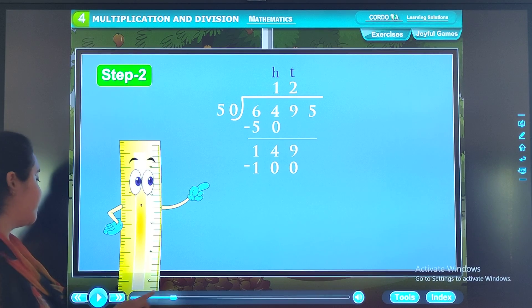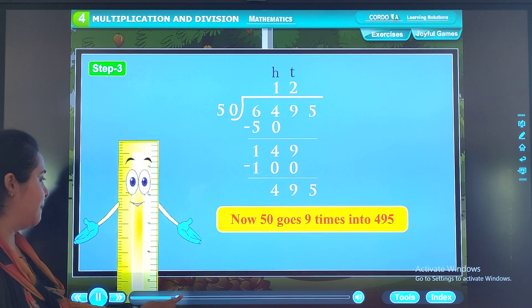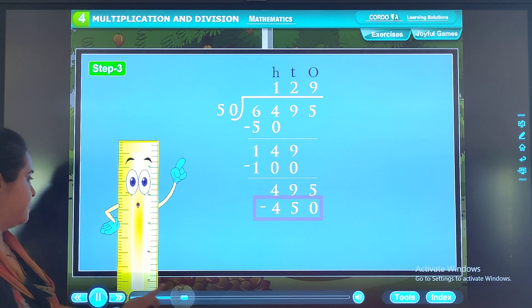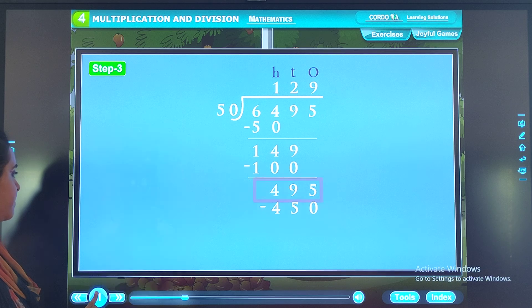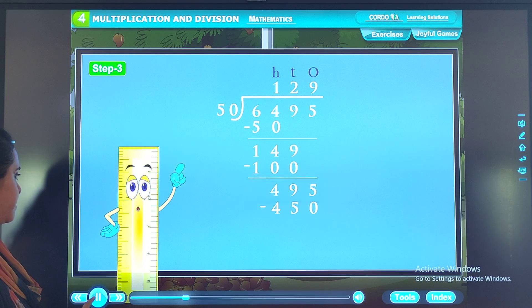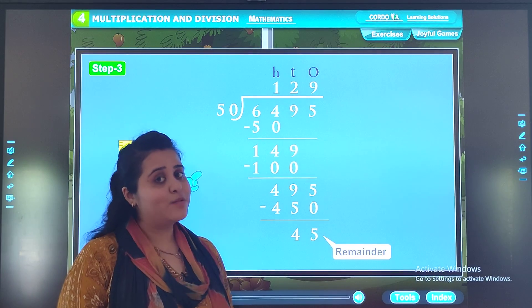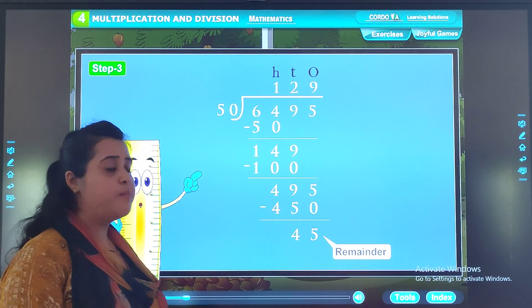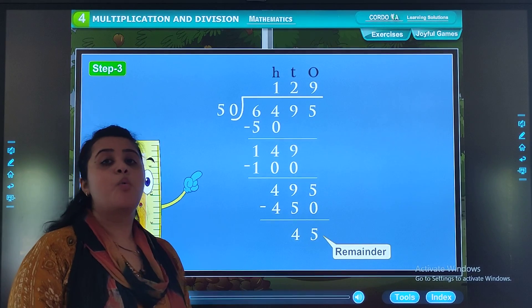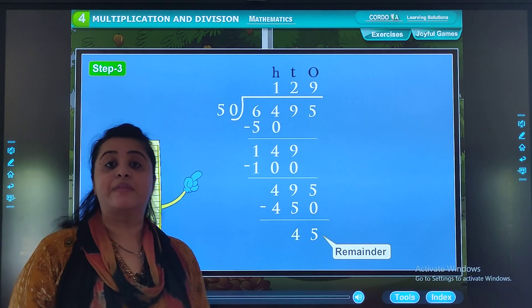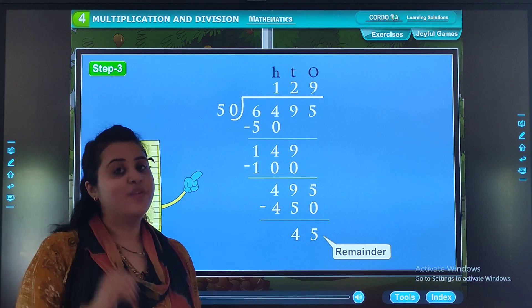Students, in this way we will be getting 45. We get 49. 50 from 495, we get 45 as remainder. So in this way we will come to know that in one box there will be 129 mangos and 45 will be remaining after filling 50 boxes.